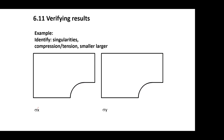Now I want you to sketch sigma x and sigma y. Think about the stresses: look for any singularities, and consider where to expect smaller or larger values for compression and tension. You might see singularities at these corners — here you have a change in boundary conditions, supporting in two different directions, and these corners might be tricky.